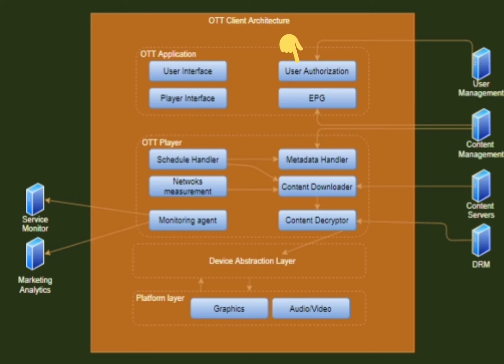Next is user authorization — these components are responsible for presenting access to only authorized content to the user as per their subscription. Next is EPG: the EPG is a menu-based system that provides OTT clients with a continuously updated menu displaying scheduling information for current and upcoming programs. Some guides also feature backward scrolling to promote catch-up content, and are commonly known as TV guides.